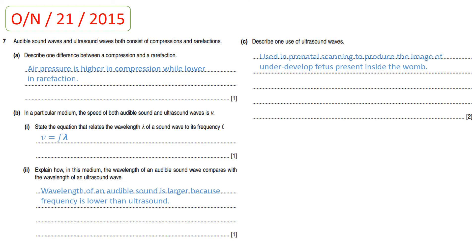The next question is from October-November paper 2.1, 2015. Audible sound waves and ultrasound waves both consist of compressions and rarefactions. One difference: compression is a higher air pressure region while rarefaction is a lower air pressure region. Part B: in a particular medium the speed of both audible sound and ultrasound is V. State the equation relating wavelength lambda to frequency f. The wave equation is: V = f × lambda, meaning speed equals frequency times wavelength.